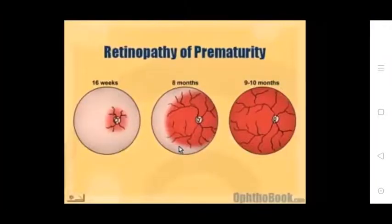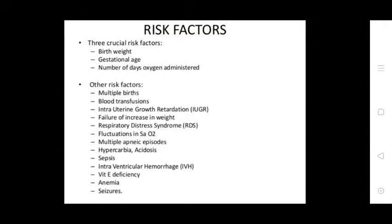Risk factors include three criteria: birth weight, gestational age, and number of days of oxygen administration. Other risk factors include multiple births, blood transfusion, intrauterine growth restriction, failure to increase in weight, respiratory distress syndrome, fluctuations in SaO2, multiple apneic episodes, hypercarbia, acidosis, sepsis, intraventricular hemorrhage, and vitamin E deficiency, anemia, and seizures.